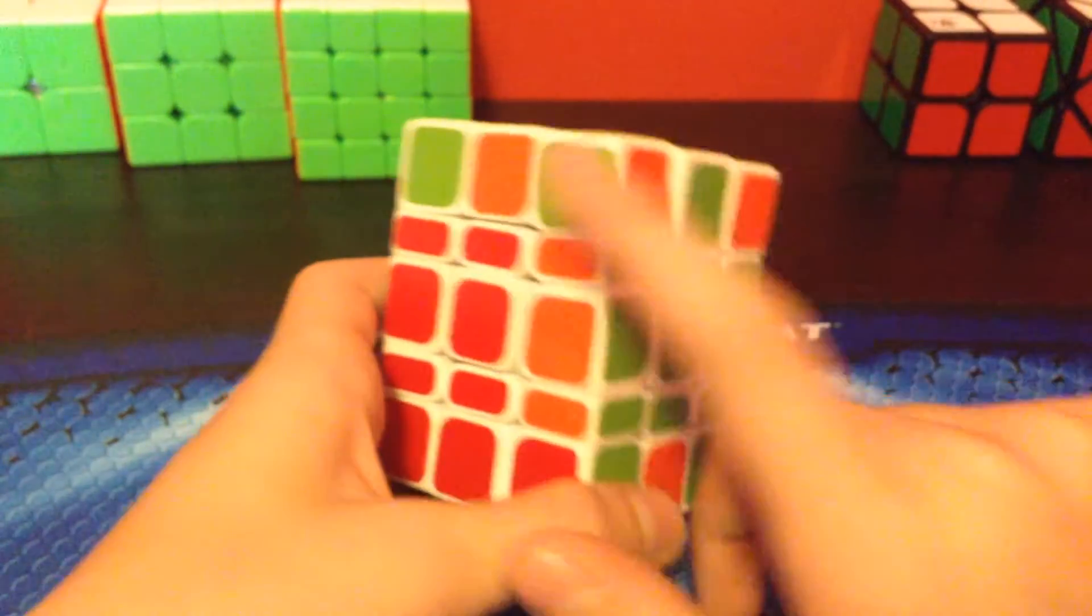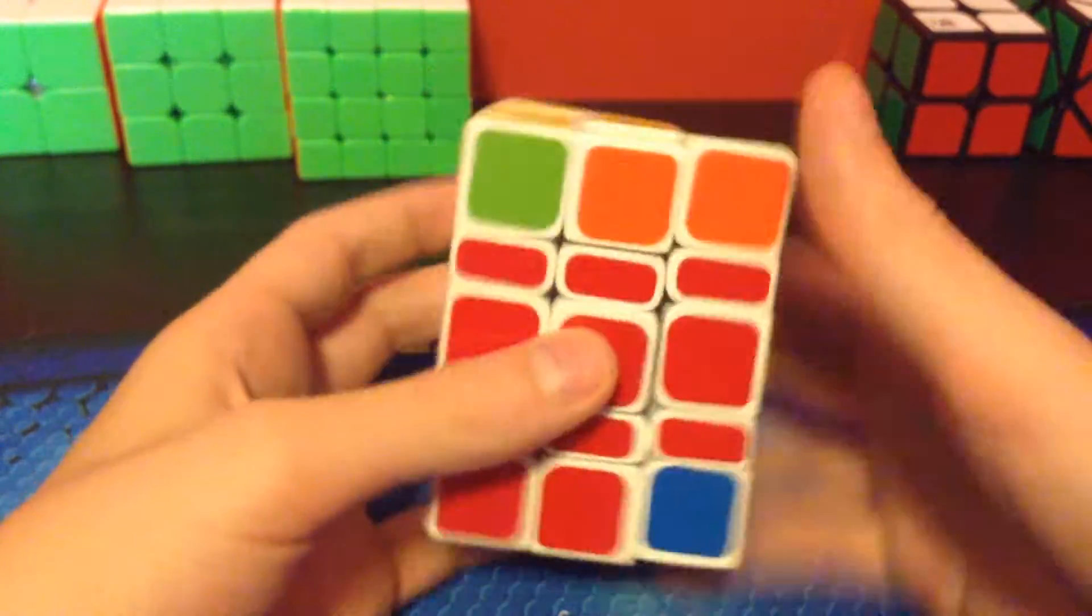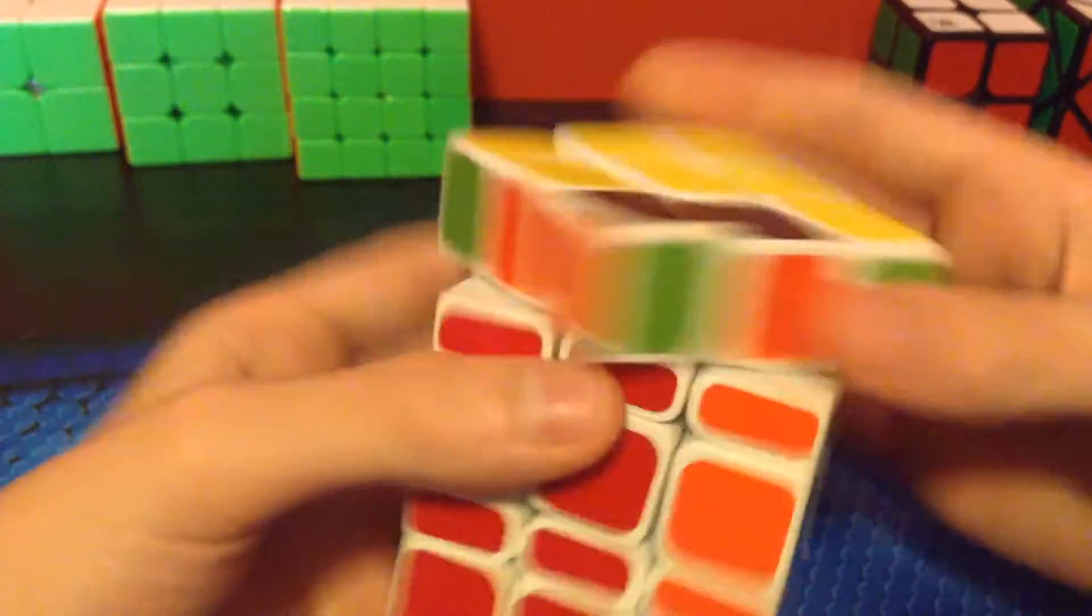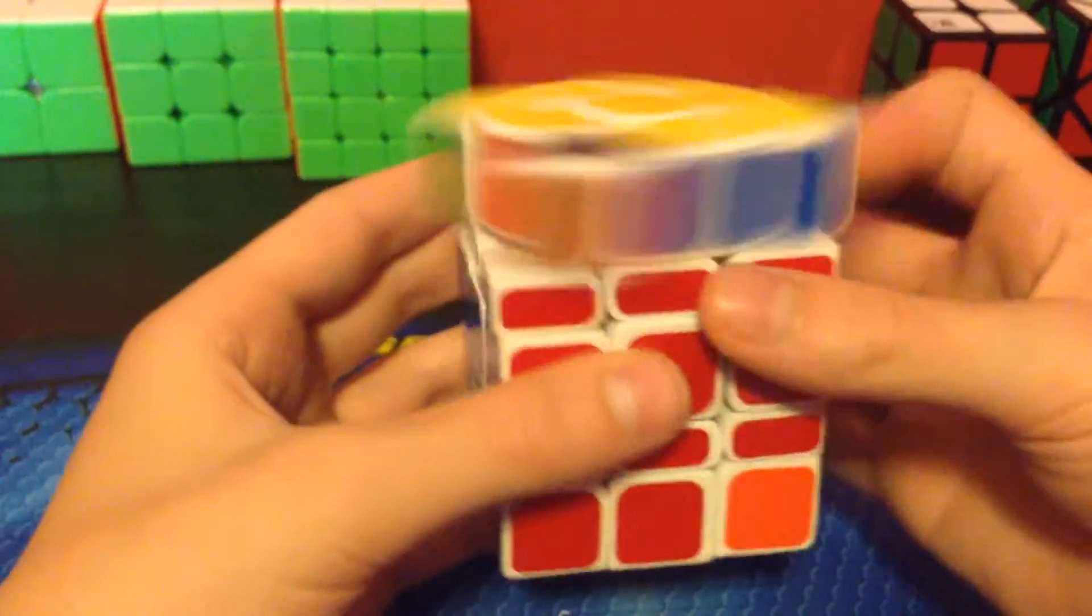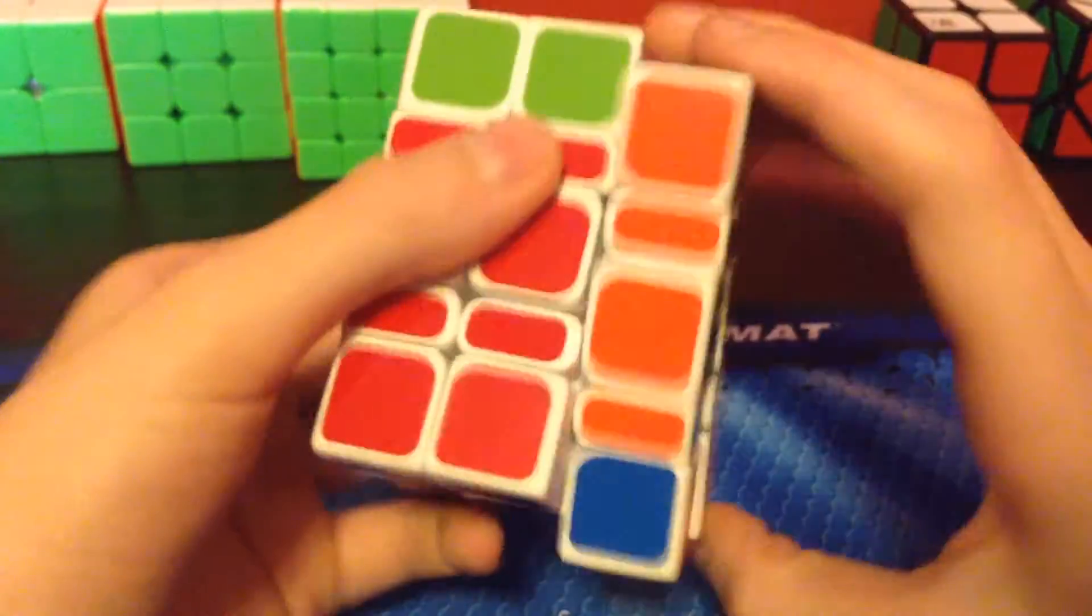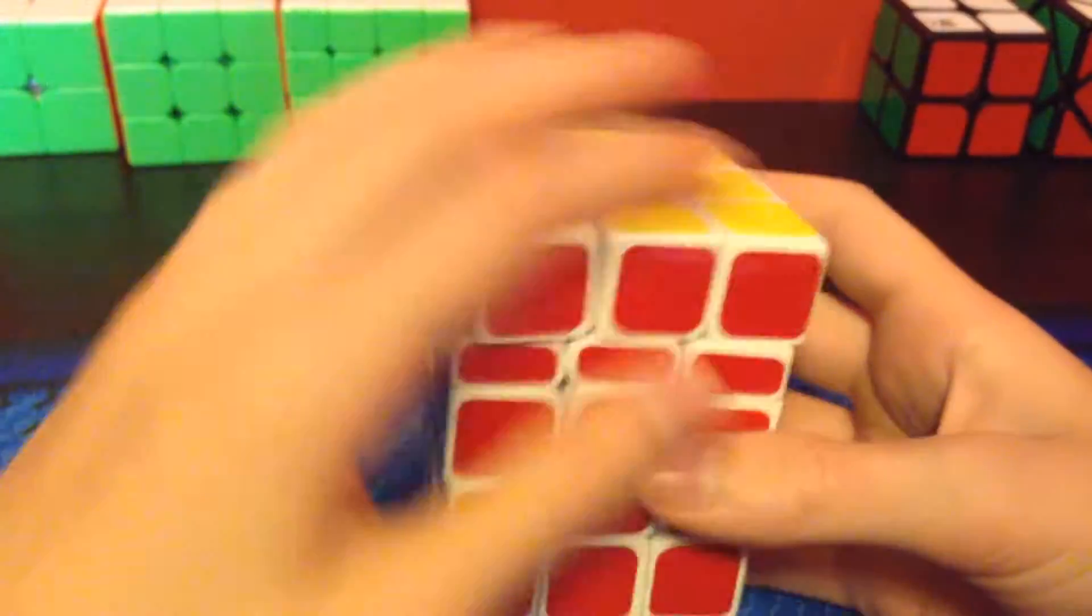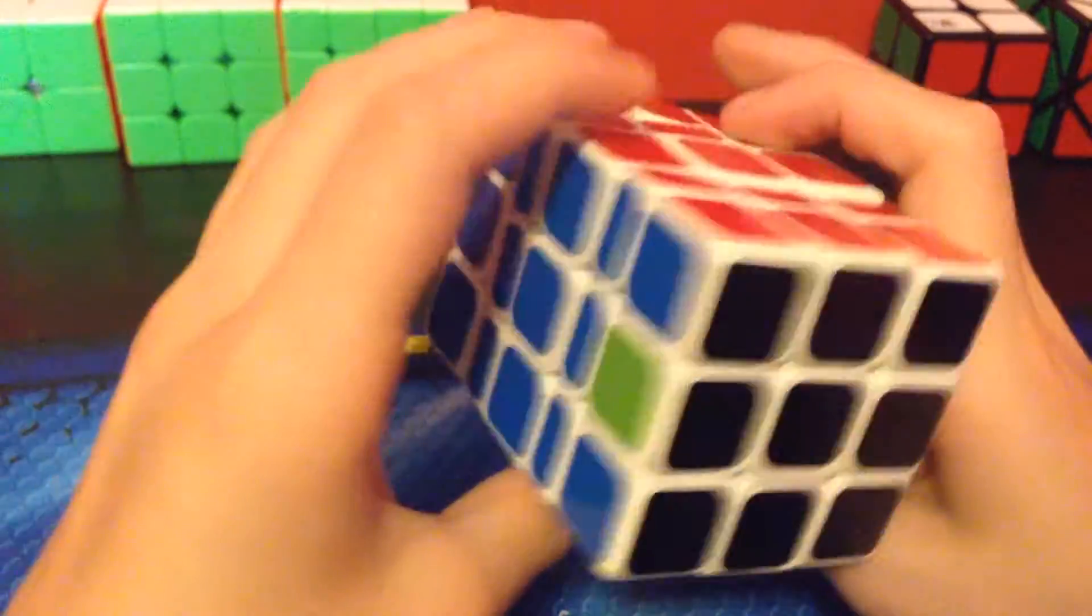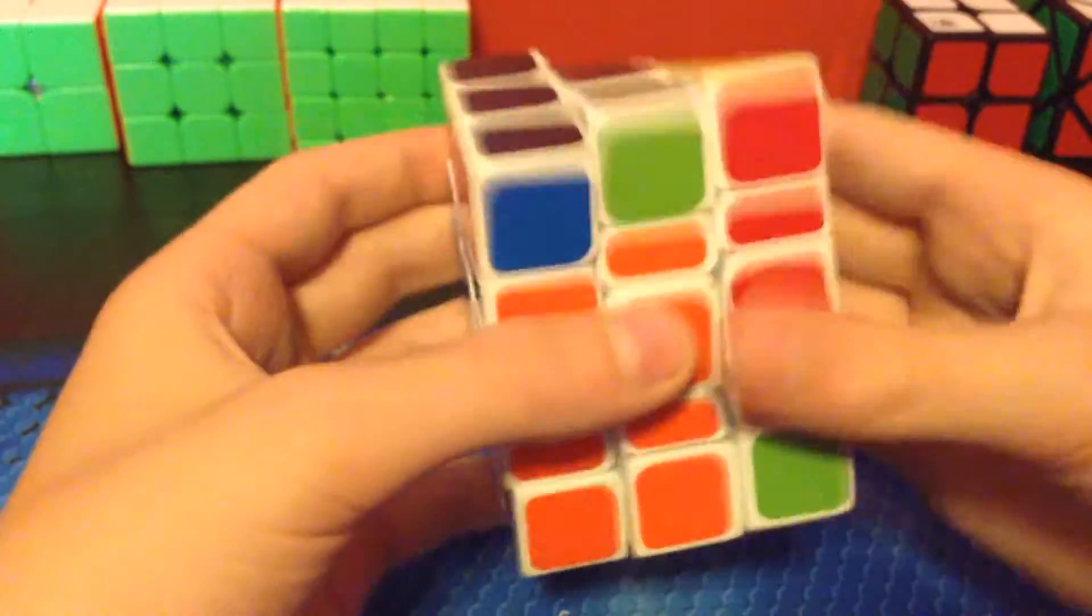So, then, I have to switch these adjacent edges, so I'd set them up, so they're opposite. Then, I do the algorithm. And then, now I solved that layer, so now I do the same thing for this side.